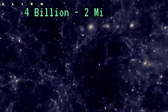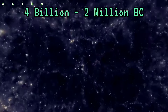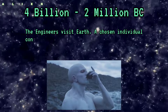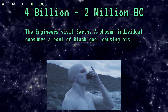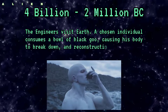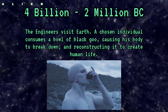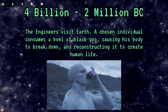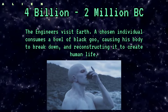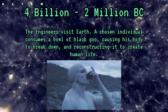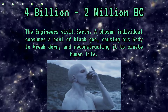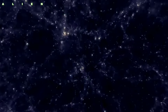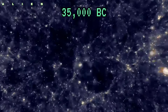4 billion to 2 million BC: The Engineers visit Earth. A chosen individual consumes a bowl of black goo, causing his body to break down and reconstruct, creating human life.